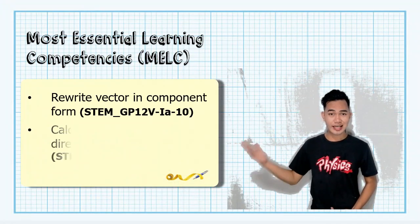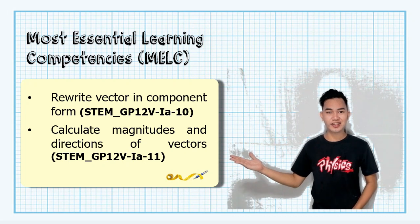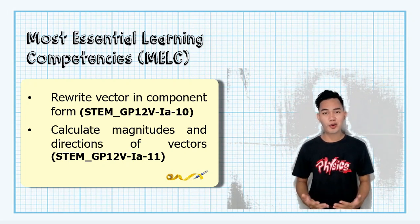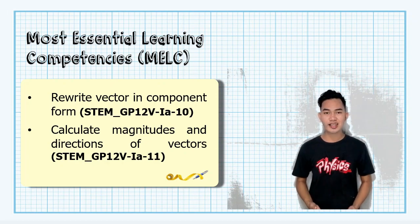This lesson, here are the most essential learning competencies that you need to learn. First, write vector and component form and calculate magnitudes and directions of vectors. On the previous lesson, we learned about how to add vectors using the graphical method. This time, we have another way of how to do it.